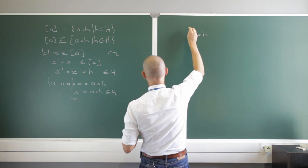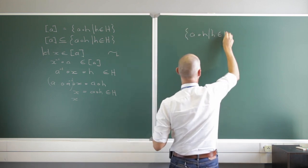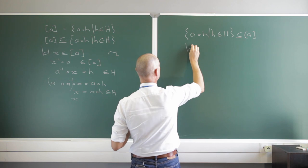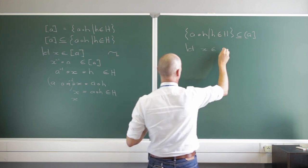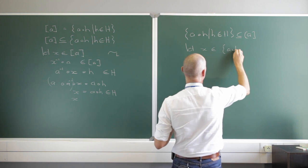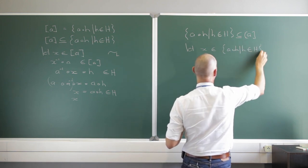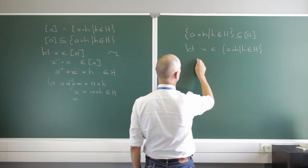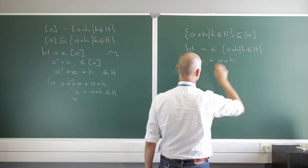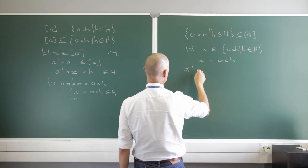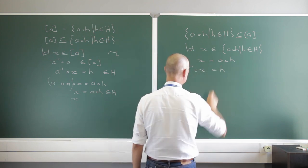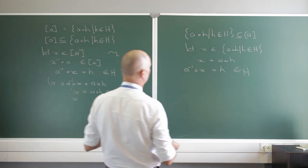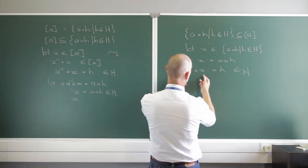Now let's look at the other side, where I have the set {AH : H ∈ H}. I must show that this is a subset of the equivalence class on A. Let X be an element of AH — so X = Ah for some h ∈ H. If I apply A inverse on the left, A inverse X equals h, which is an element of H. That is exactly how I defined my equivalence relation, so this confirms X is in the equivalence class.